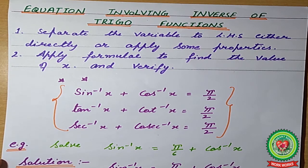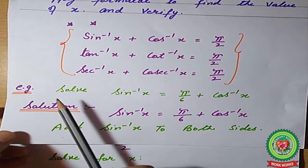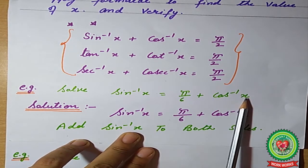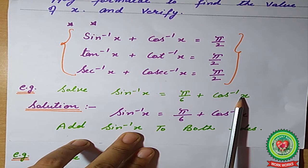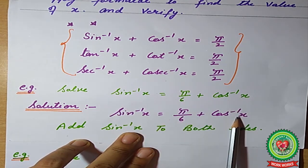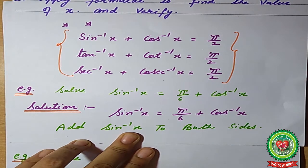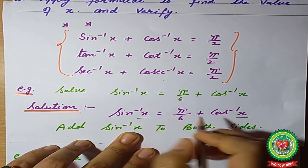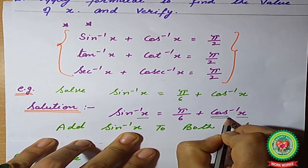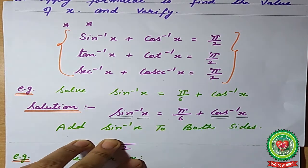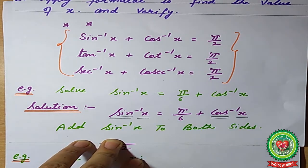According to our first example: solve sin⁻¹x = 5π/6 + cos⁻¹x. The first step is to separate the variables. Here we have x in both terms — one is cos⁻¹x and the other is sin⁻¹x — so our first priority is to convert them into the same ratio.